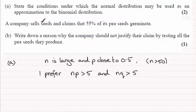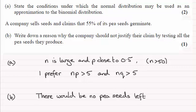In Part B, we're told that a company sells seeds and claims that 55% of its pea seeds germinate. We've got to write down a reason why the company should not justify their claim by testing all the pea seeds they produce. The answer the mark scheme gives is that there'll be no pea seeds left — obviously they wouldn't have anything else to sell.